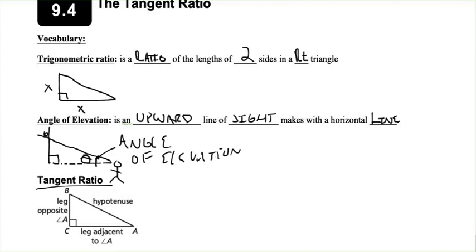For the tangent ratio, in any right triangle you have two different legs, and which leg you're talking about depends on which angle you are talking about. The hypotenuse is always known as the hypotenuse — it doesn't get to change names. Starting with angle A, leg BC is opposite of angle A. It's on the opposite side of the triangle. Line AC is adjacent to A — right next to A and not the hypotenuse. So the tangent ratio: